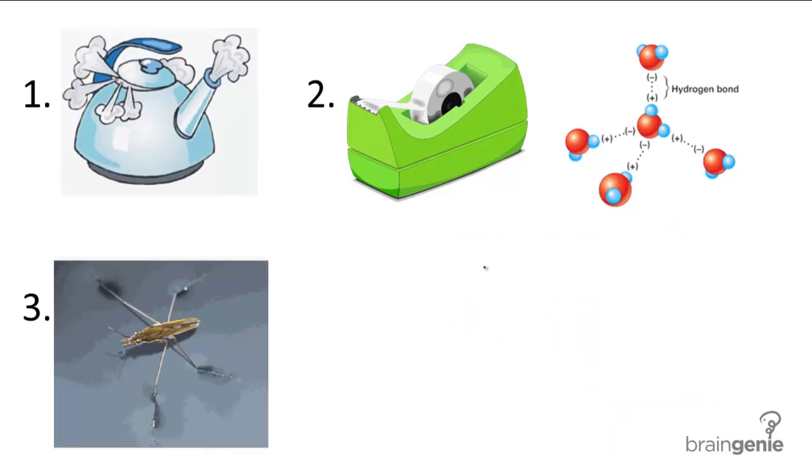Number three, hydrogen bonding gives water high surface tension. If you've ever seen a bug land on the water, it doesn't sink because there's enough tension on the surface of the water to support the bug's weight.